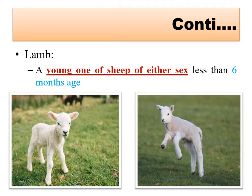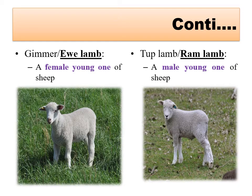A young one of sheep of either sex less than six months of age is called a lamb. In the case of cattle and buffalo it was called a calf, but for sheep species the young one of either sex less than six months of age is called a lamb.